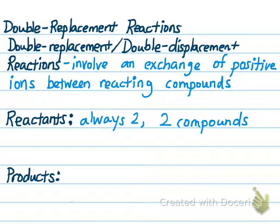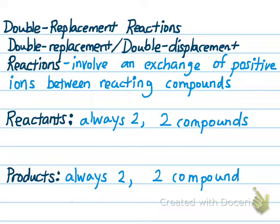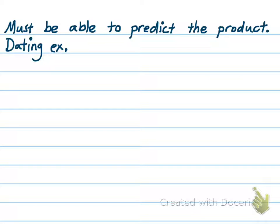How will we tell a double replacement reaction from a single replacement? They both have two reactants. The difference is a single replacement reaction has an element and a compound, while double replacement reactions have two compounds as reactants. In terms of products, there are always two, and they are also two compounds — different compounds, because the stronger positively charged metal ion has forced its counterpart out of the other compound. So double replacement reactions always have two reactants and two products; two compounds react and two compounds are produced. For these, you must be able to predict the product.